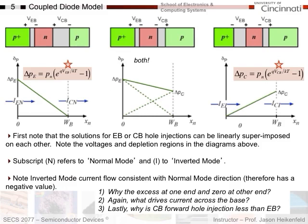The first thing I want to do is look at a BJT in normal forward active mode. Everything should look familiar: I've got P+, N, and P-type material. My emitter-base is forward biased; my collector-base is reverse biased. If I look at my hole concentration across the base, I get an excess delta P_E on this side because it's forward biased and bringing the holes over. At the base edge W_B, the concentration goes to zero because this is the cliff edge — the edge of the depletion region where all those holes are swept across. And of course, delta P_E is dependent on the emitter-base voltage V_EB.